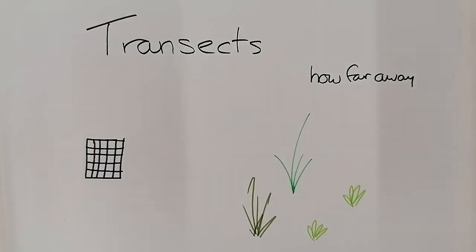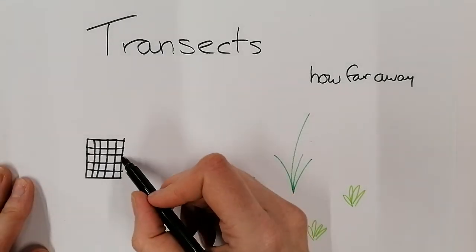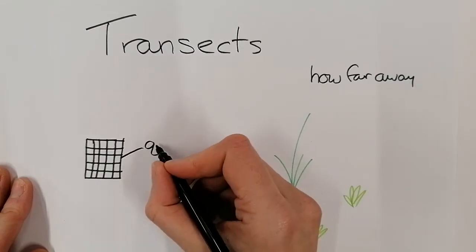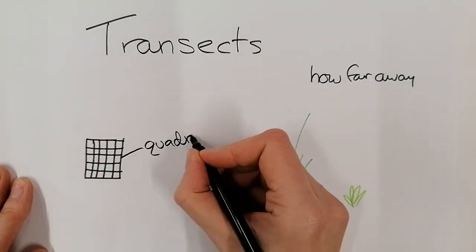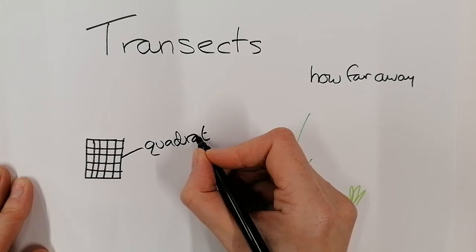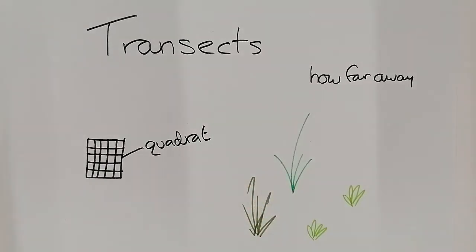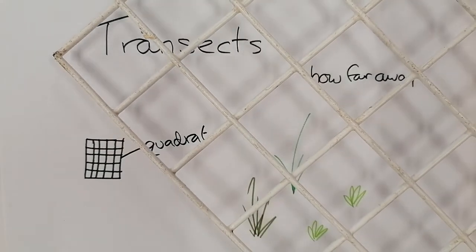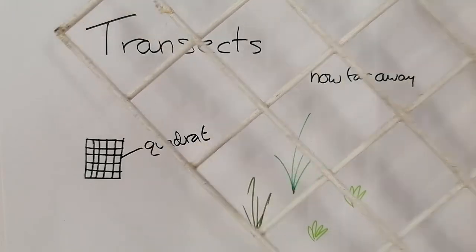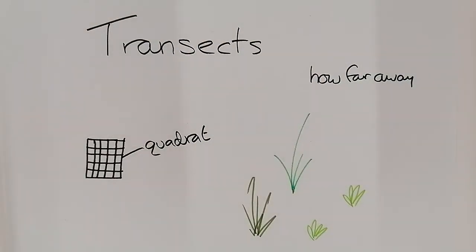You'll also be using a frame quadrat. So this is called a quadrat, and a quadrat is a grid, four by four grid, sometimes with little squares in between.